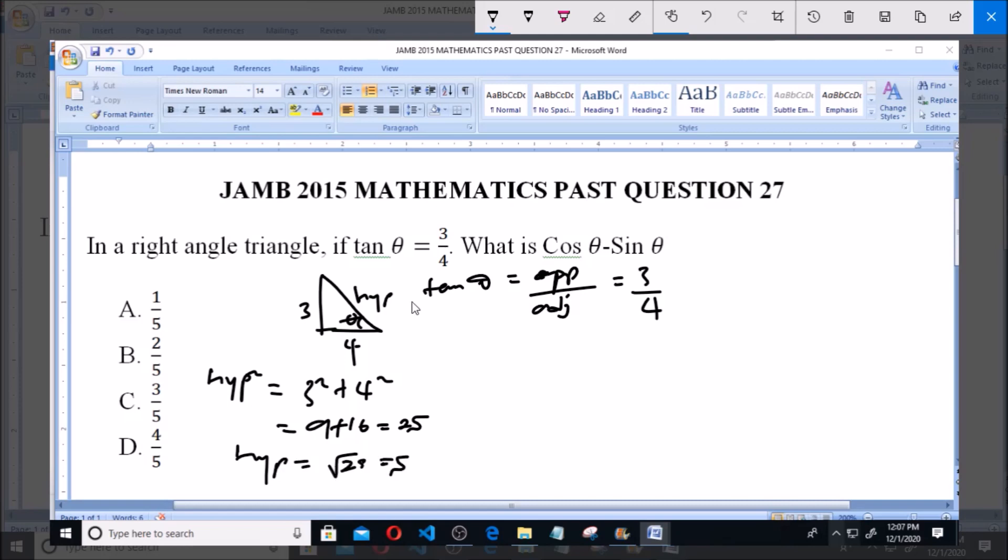Now cos θ = adjacent/hypotenuse = 4/5, and sin θ = opposite/hypotenuse = 3/5.